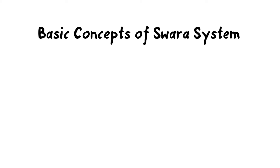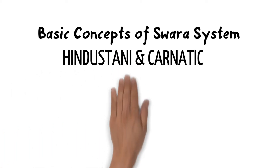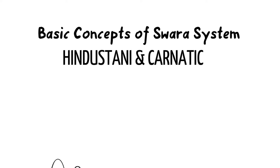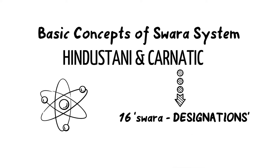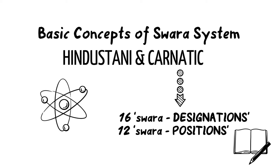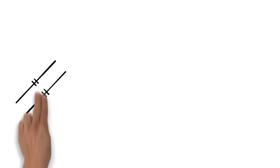The basic concepts of the swara system are shared between Hindustani and Carnatic music traditions. However, the advanced theory differs: Carnatic theory states there are 16 swara designations but only 12 swara positions. This deeper exploration is a story for another day.